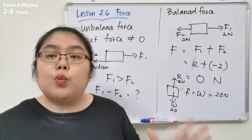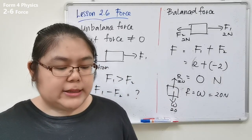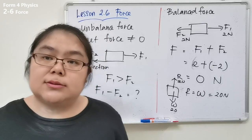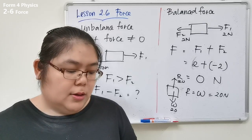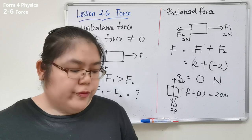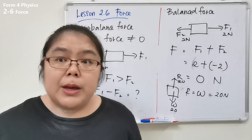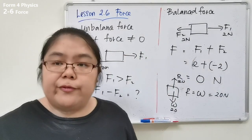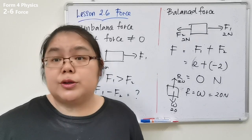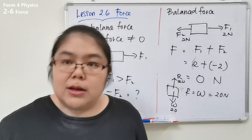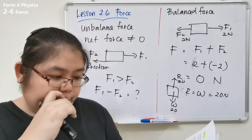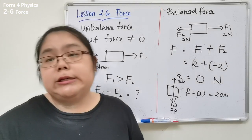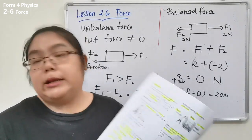Force causes effects on objects. First: it can change the state of rest — if you are at rest and a force is applied, you start moving. Second: it can change the state of motion — if an object is moving, applying a force can slow it down or stop it. These are situations for unbalanced force.